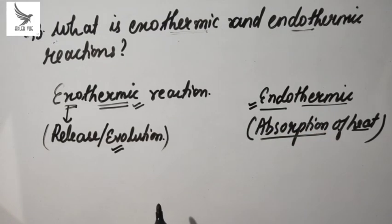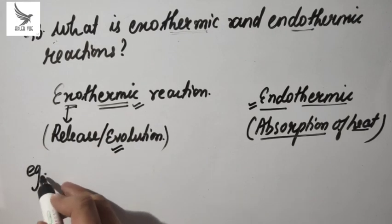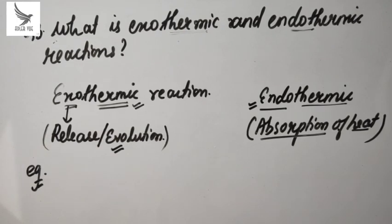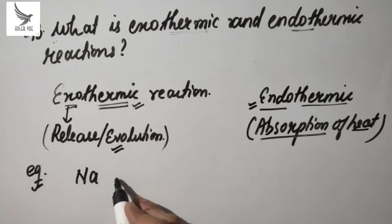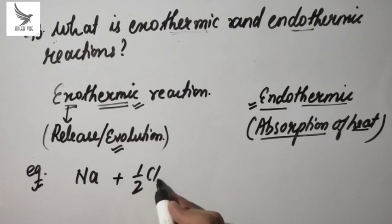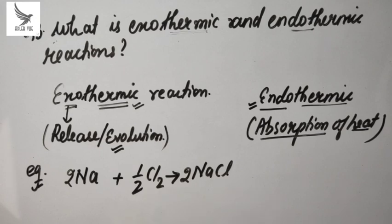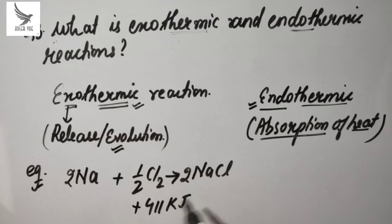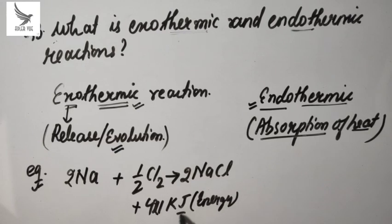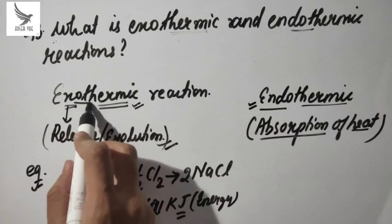Let's take an example of an exothermic reaction. Here we have sodium reacting with chlorine gas — 2Na + Cl2 → 2NaCl — sodium chloride is formed. This reaction releases approximately 411 to 421 kilojoules of energy. Kilojoule is the SI unit of energy. Since energy is released in this reaction, it is an exothermic reaction.